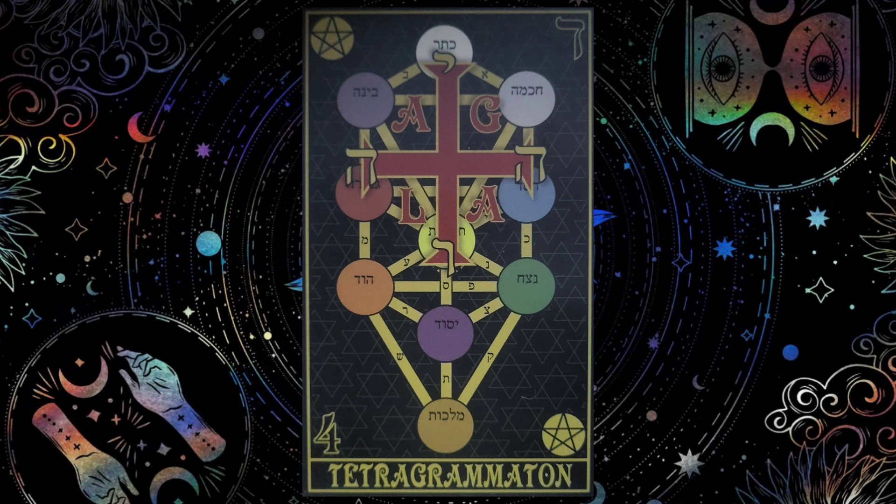The Tetragrammaton was first used by Moses in Genesis 2:4. Each Hebrew letter has a numerical value: Yad equals 10, He equals 5, and Vav equals 6.